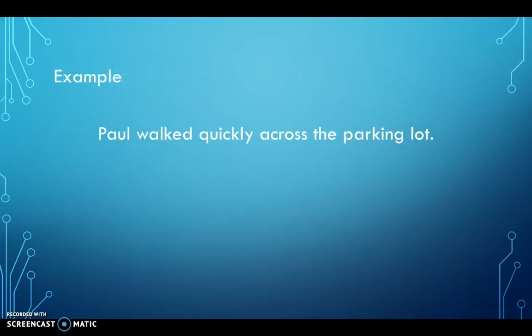So here's an example. Paul walked quickly across the parking lot. The first thing I need to do when I'm trying to find the adverb is to identify the verb. And the verb in this sentence is walked. And I'm going to ask myself the question, how did Paul walk? What word in that sentence answers the question, how Paul walked? Well, he walked quickly. So quickly is the adverb in that sentence. So the adverb used in the sentence is quickly.